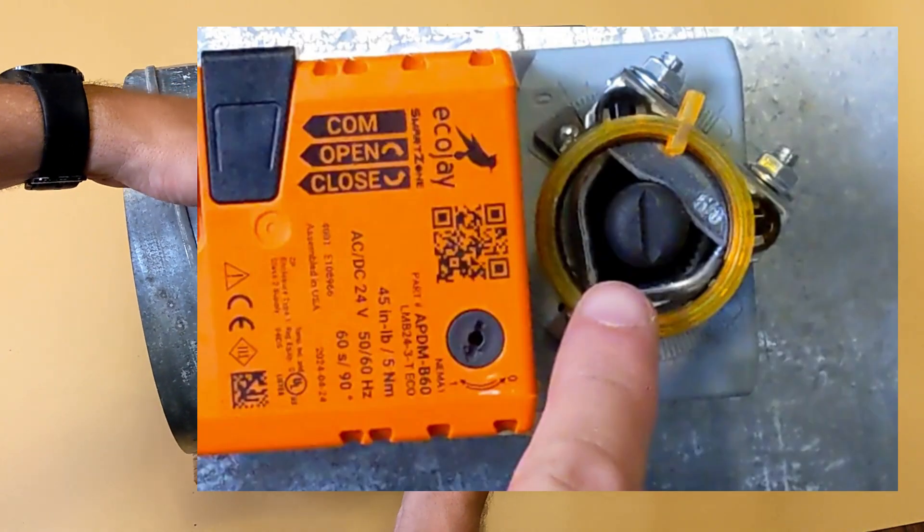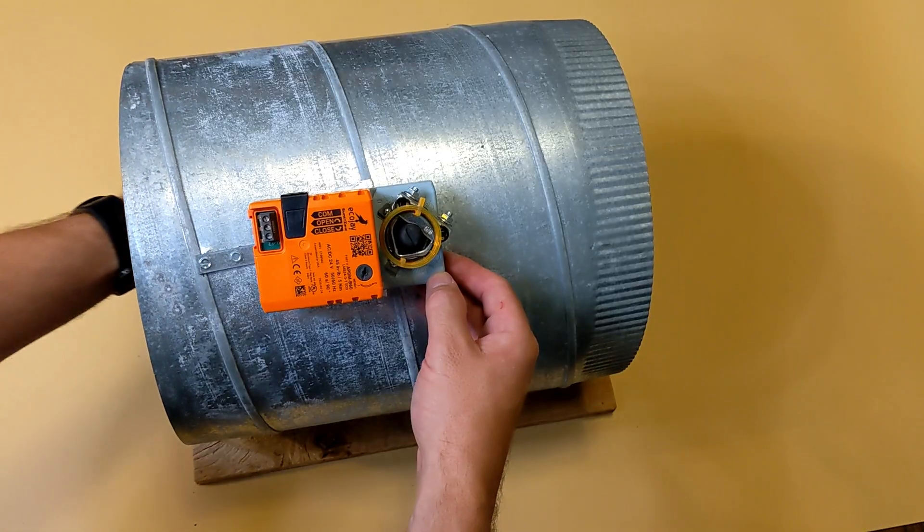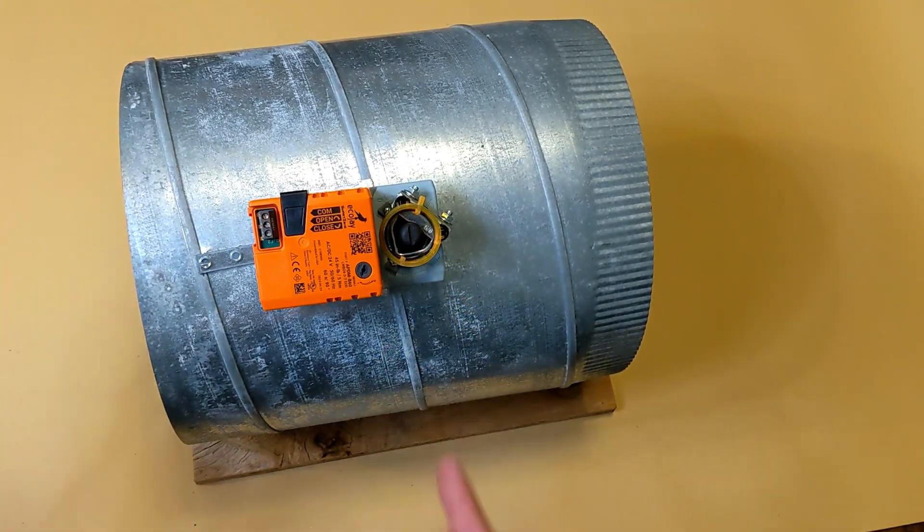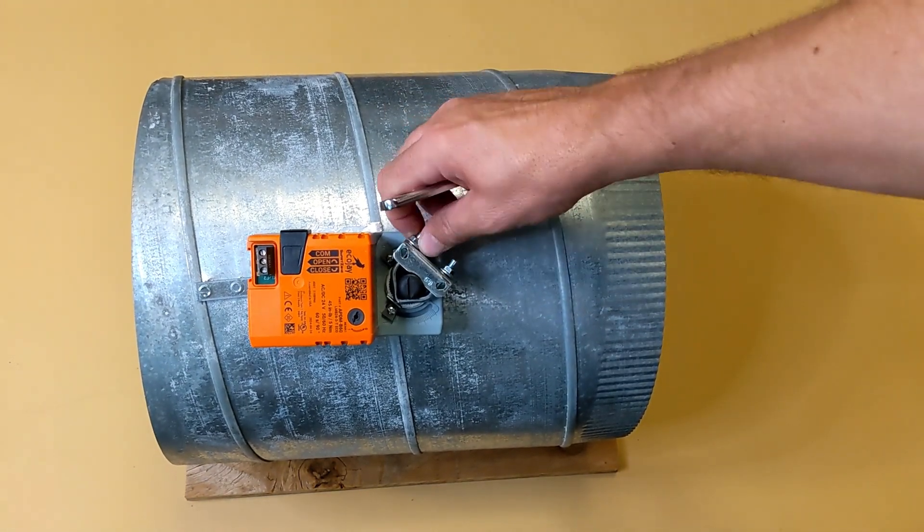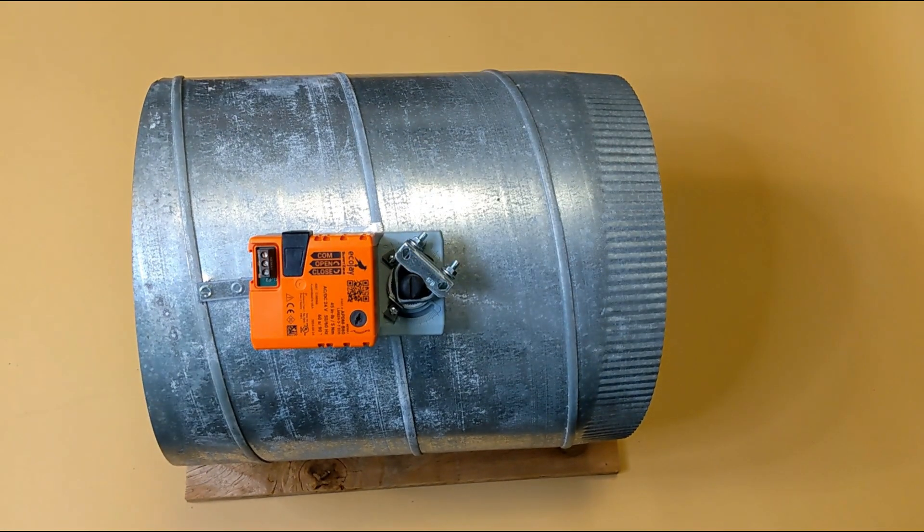Once you've ensured that the damper blade is in the closed position and that the damper motor is in the closed position, it's time to tighten the two nuts on the U-bolt. These should be tightened evenly until the U-bolt is snug on the shaft adapter.